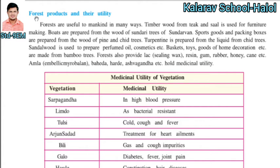Now we will discuss the remaining part of this lesson. The next point is forest products and their utilities — whatever products we can get from the forest. Forests are useful to mankind in many ways. Timber wood from the teak tree and sali is used for furniture making. Both are prepared from the wood of sundri trees.